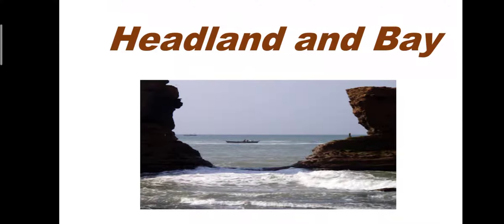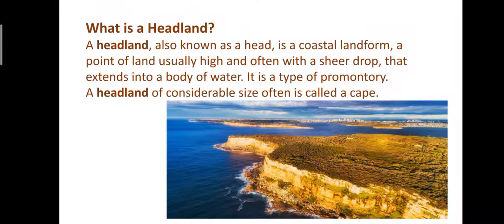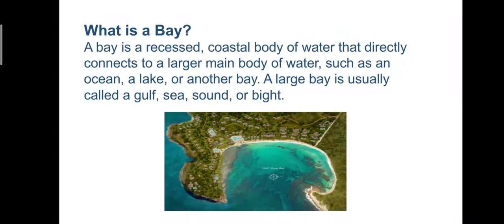Our today's topic is about headland and bay. What is a headland? A headland, also known as a head, is a coastal landform, a point of land usually high and often with a sheer drop that extends into a body of water. It is a type of promontory. A headland of considerable size often is called a cape.